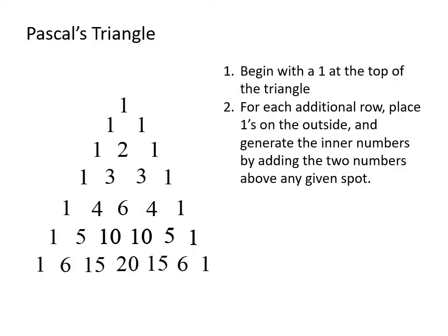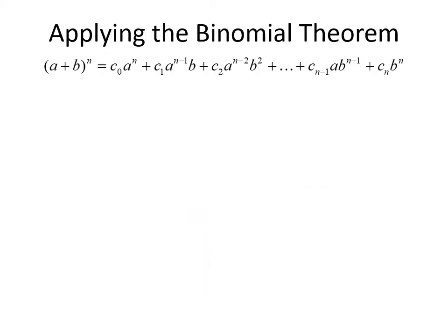A rule of thumb is that the second number in the row represents the n, or the power, on your binomial. So let's apply the binomial theorem with a few examples. Remember, the binomial theorem says (a + b) to the n equals a series of coefficients: a starts with the full power, and each term is reduced by 1, while b starts with the power of 0 and each subsequent term is increased by 1.